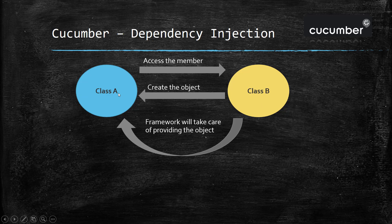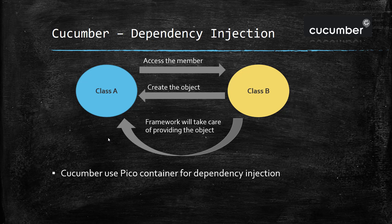In Cucumber framework, the PICO container is used for dependency injection, and there are different types of dependency injection in which we are going to discuss the constructor injection.